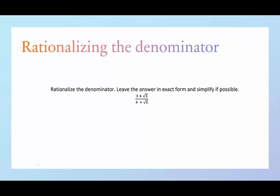So we're given this division expression, 3 plus the square root of 5, divided by 4 plus the square root of 5, and we want to make the denominator just one term, a nice rational term.